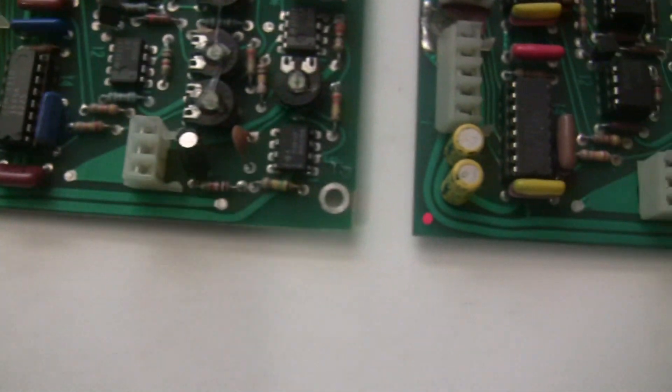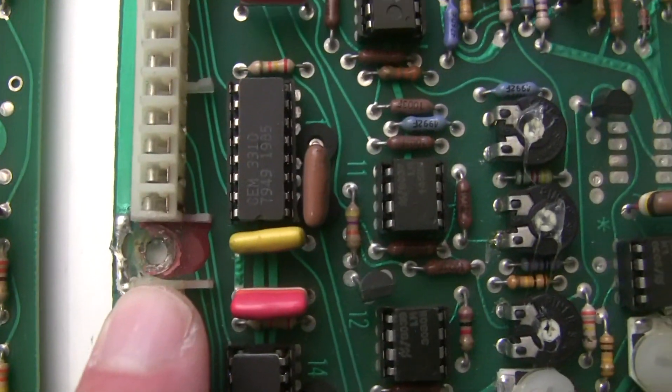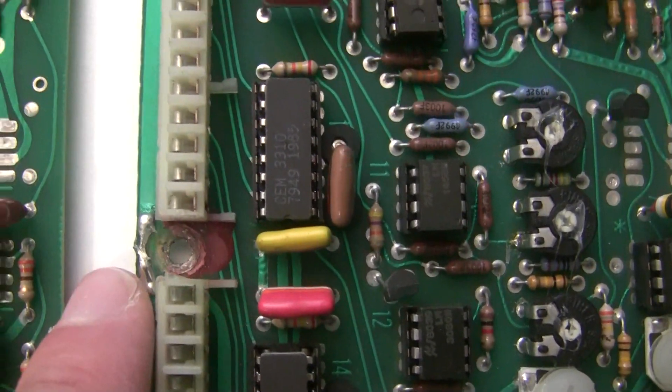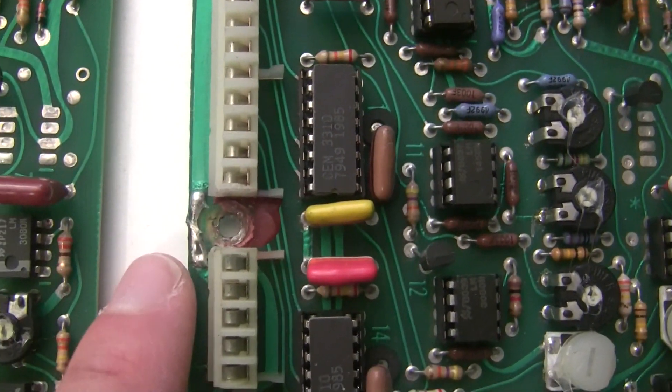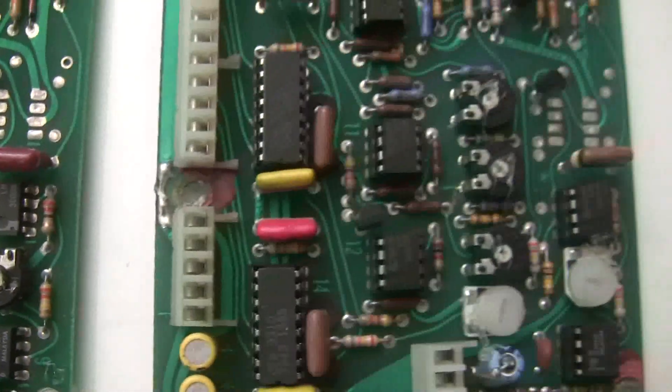And I had noticed some other chips that had been replaced like op amps and stuff. And then I noticed some damage to the board like here. Looks like maybe someone had some trouble unscrewing it and they damaged this trace when they took it out.